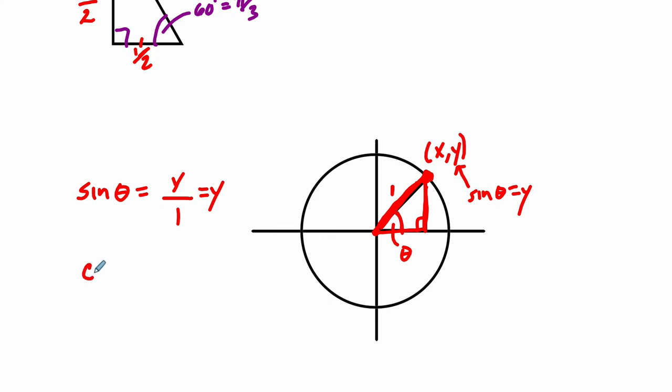And then similarly, the cosine of theta is adjacent over hypotenuse. That's the x-value. This distance right here, the distance from the origin to the left or right location of the point, is the x-value over the hypotenuse 1, and that's x. So cosine of theta is defined as the x-value of that point.